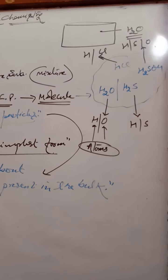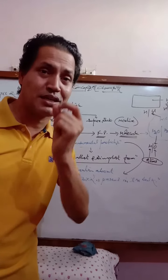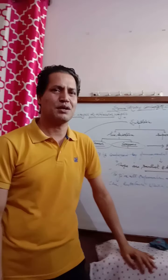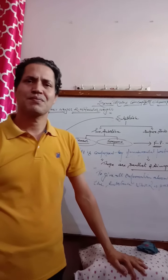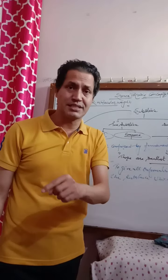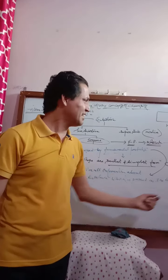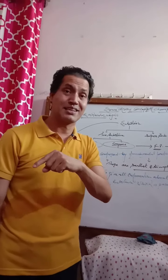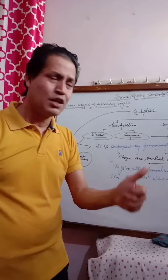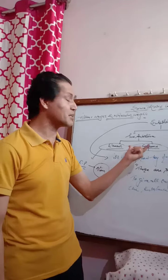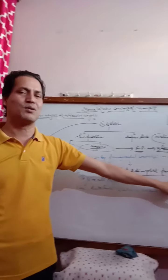So we understand that a molecule is made up of atoms. The fundamental particle of a molecule is an atom, and the molecule itself is the fundamental particle of a compound. Now let us define atom and molecule.